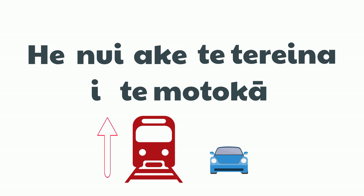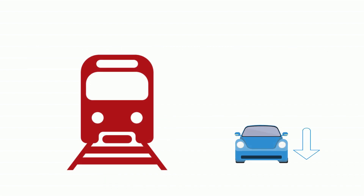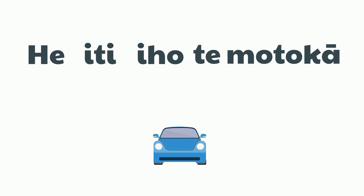Let's change the sentence. Now I want to say, 'The car is smaller than the train.' We start the sentence the same way, with 'He.' Then we say how the thing is different. Iti means small. Iti iho means smaller. Then we put the thing that's smaller — in this case, te motokā.